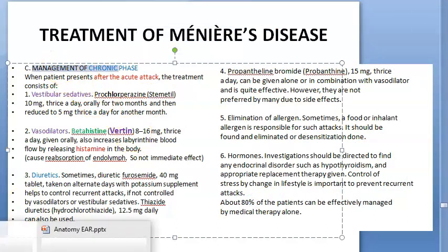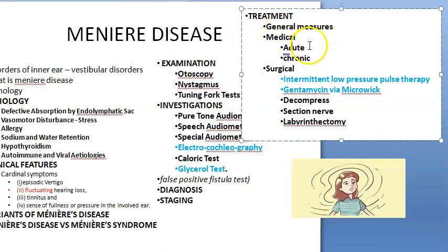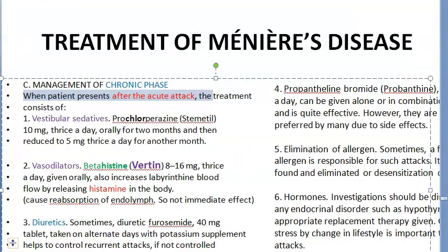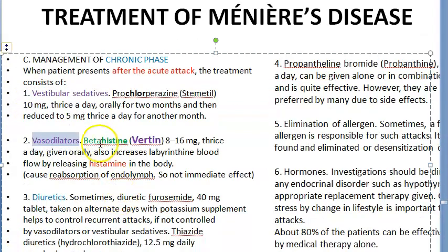Now for the chronic phase — this is the treatment after the acute attack has settled. You continue vestibular sedatives: prochlorperazine (Stemetil) 10 mg. Vasodilators are also used here.